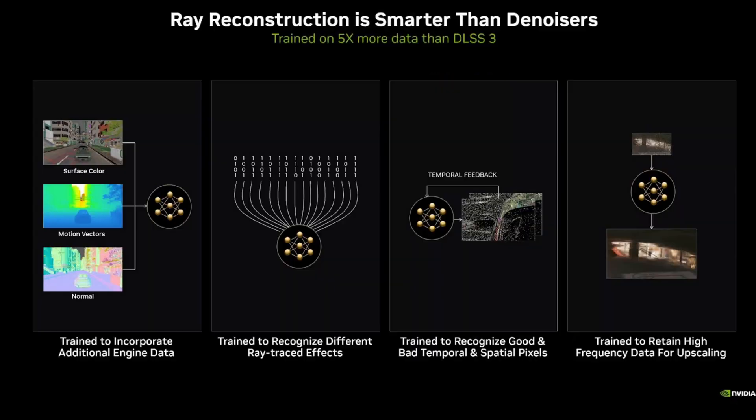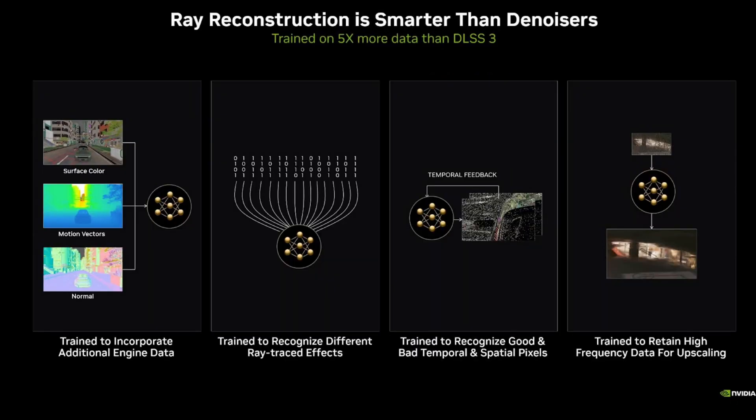Ray reconstruction is much more advanced since it can recognize lighting patterns such as global illumination, ambient occlusion, and reflections, which in turn makes the image much more stable. Right now, ray reconstruction only works with DLSS Super Resolution and not DLAA. So in games like Cyberpunk 2077 2.0, reconstruction gets disabled when you flip to DLAA.